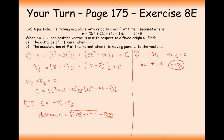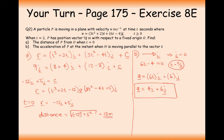Now differentiate velocity to get acceleration. Differentiating the velocity: the i component gives 6t (the constant 2 differentiates to 0), and the j component gives 6. Plugging in t equals 2 thirds gives acceleration of 4i plus 6j. We found t equals 2 thirds by setting the j component of velocity equal to 0 — that is when it travels directly east, parallel to i.